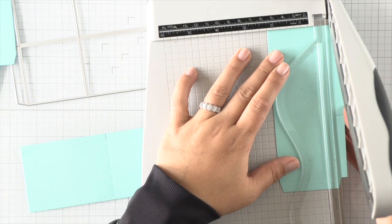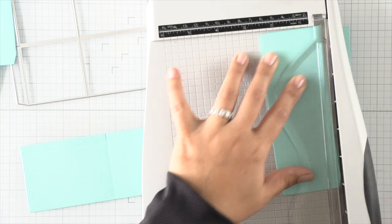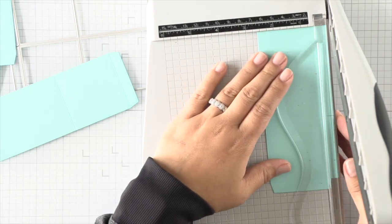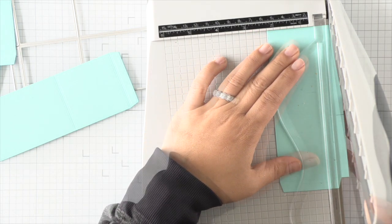So I'm gonna go ahead and just die-cut the bottom portions of the box card die only, and then I'll trim off what I don't need from the top portion of this die cut.